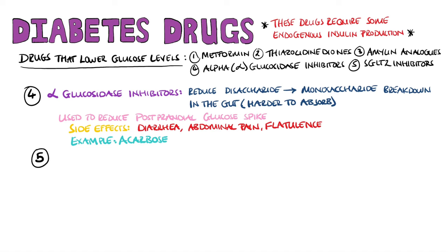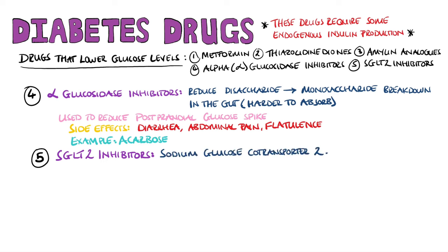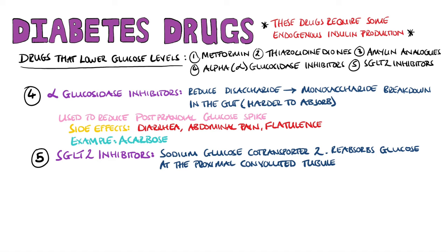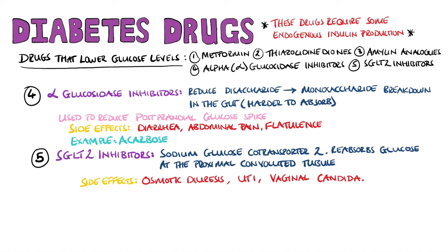The final class is SGLT2 inhibitors, used in both type 1 and type 2 diabetes. SGLT2 stands for sodium-glucose co-transporter 2, responsible for reabsorbing glucose in the proximal convoluted tubule. Inhibiting this transporter increases glucose lost in the urine. Side effects include osmotic diuresis due to the increased urinary glucose, as well as an increased risk of UTIs and vaginal candida.